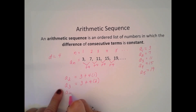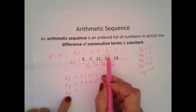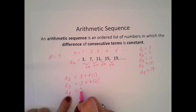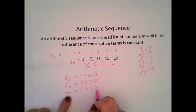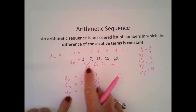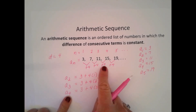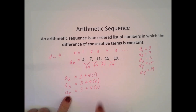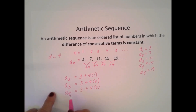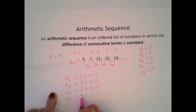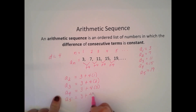A sub 4: I started out with 3 plus 4 times 3 — there are three 4s, plus I started out with my 3. A sub 5 is equal to 3 plus, this time, 4 times 4.